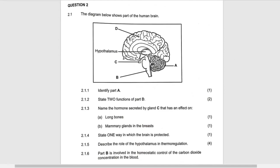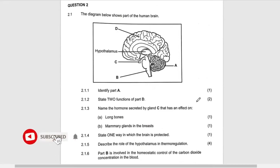State two functions of Part D, which is cerebrum. It has three functions. The first function is the center for higher thought processes, which includes memory, judgment, and reasoning.